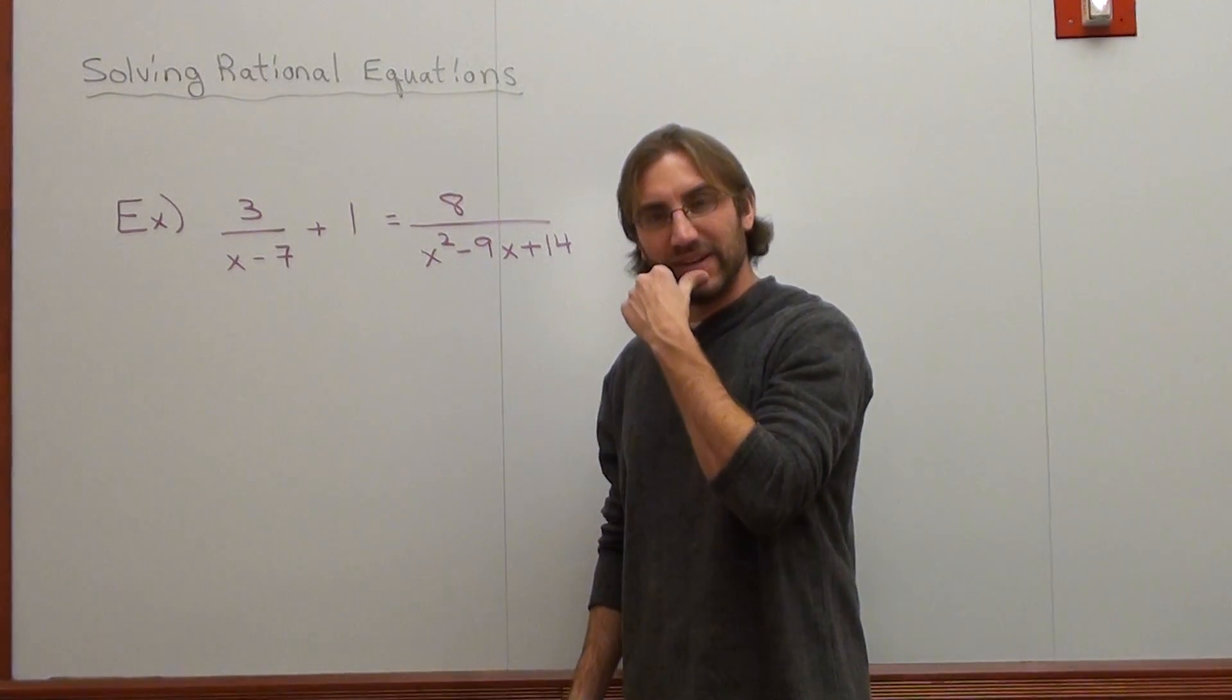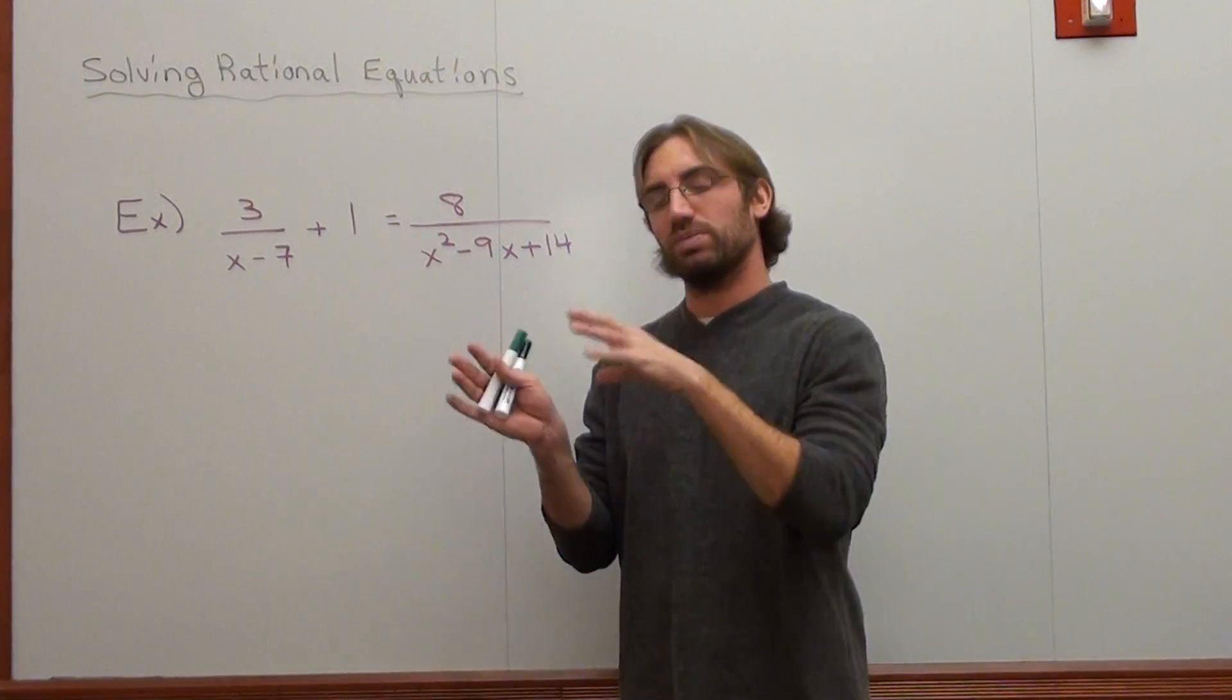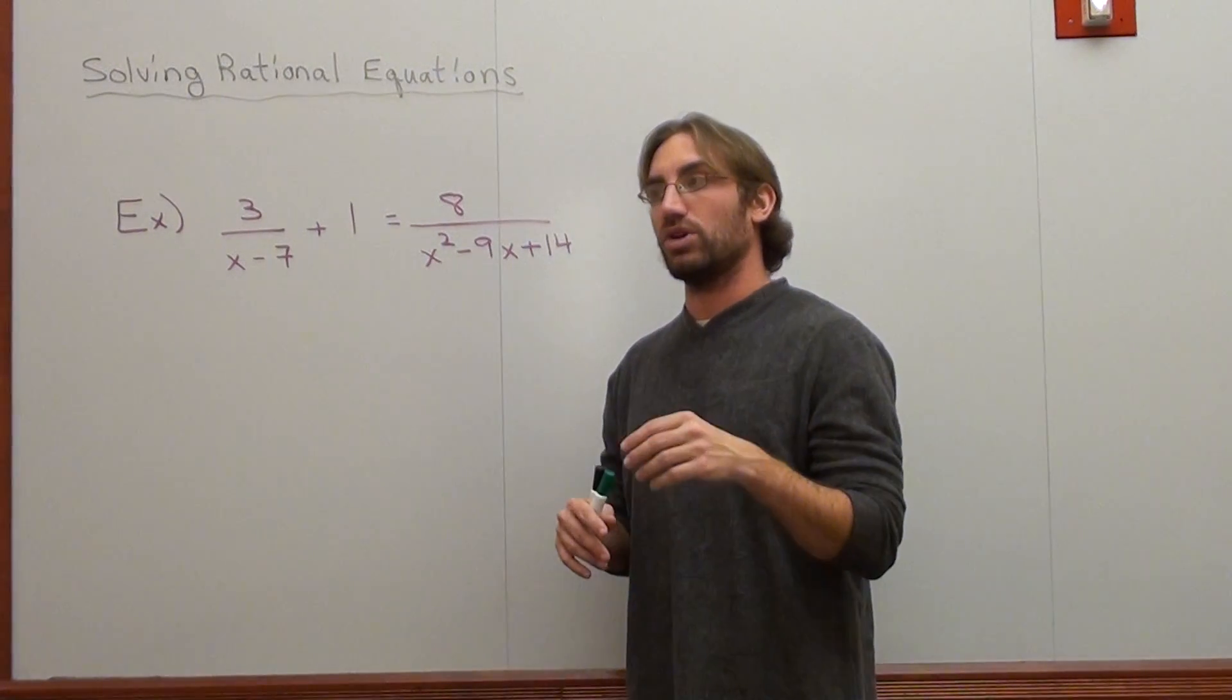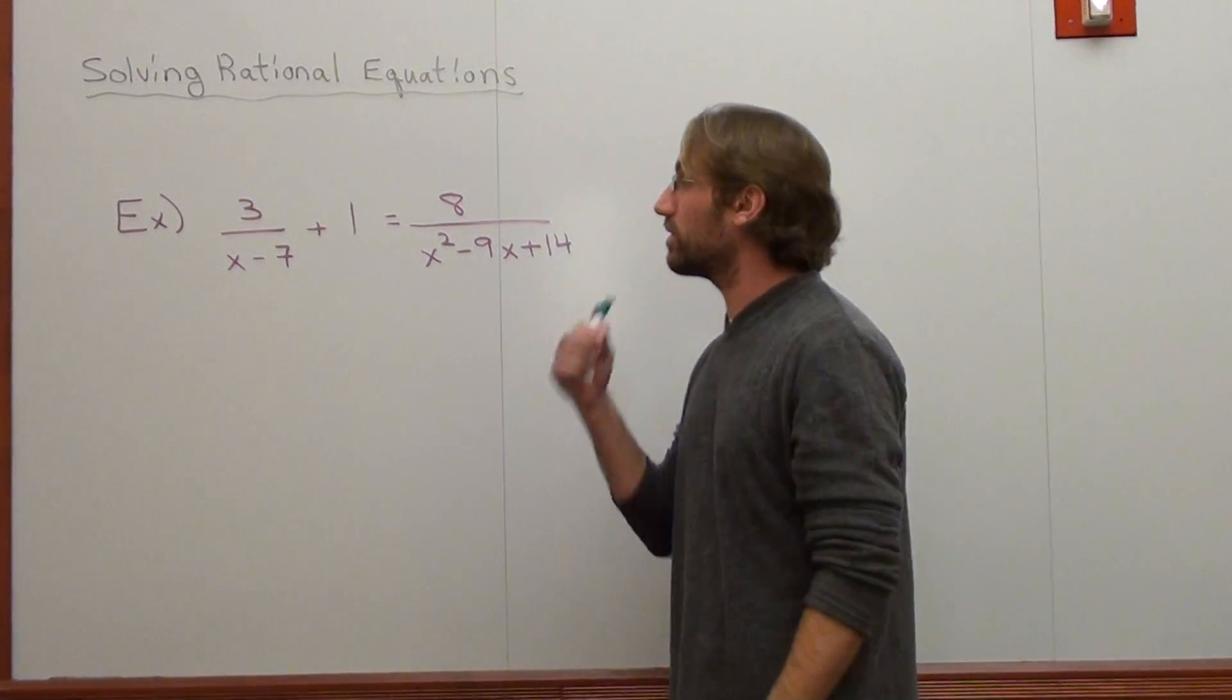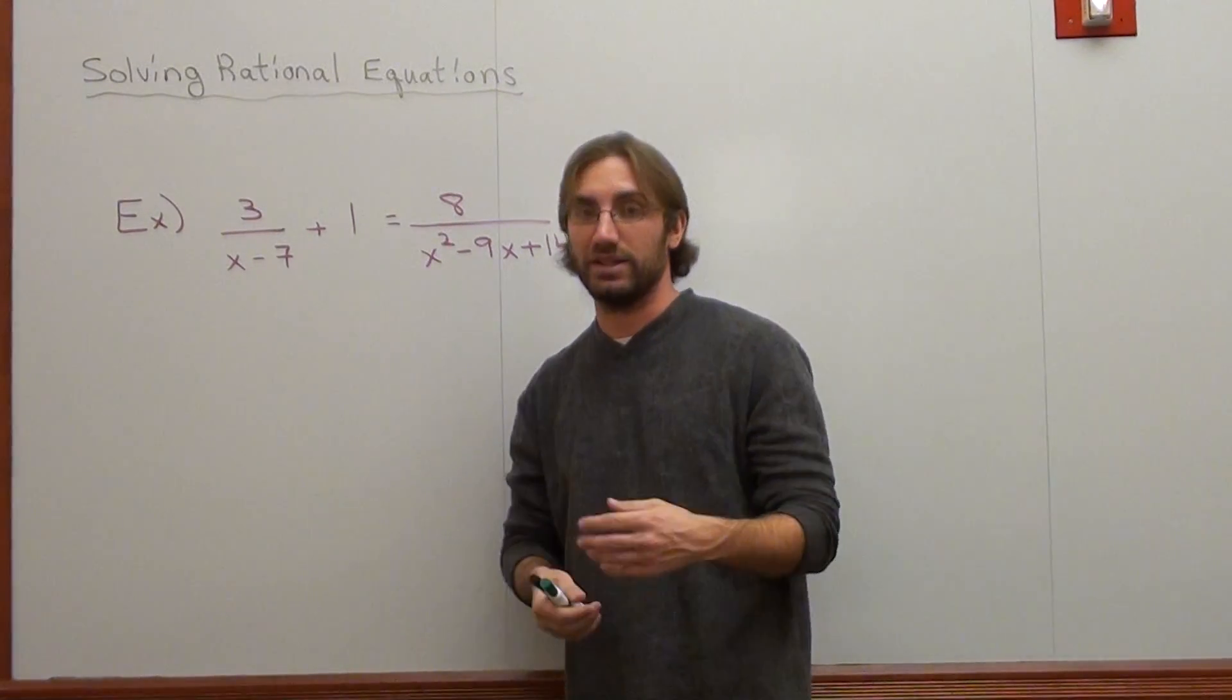But when you're solving an equation, a rational equation, you multiply from side to side. When you're solving a rational expression, what you do on the bottom, you do on the top. And that's something to keep in mind when you're doing this. And it really does make life a lot easier.